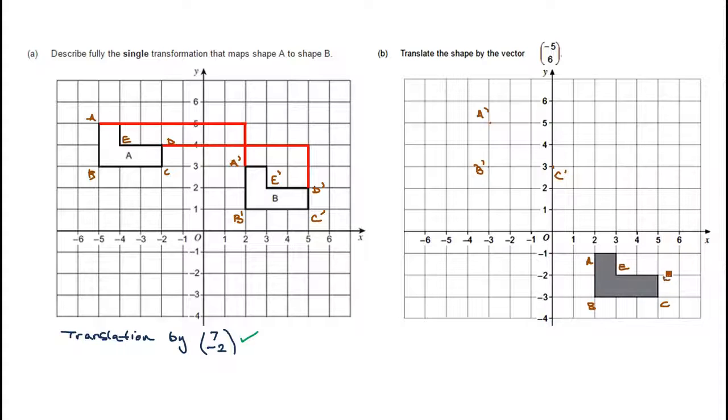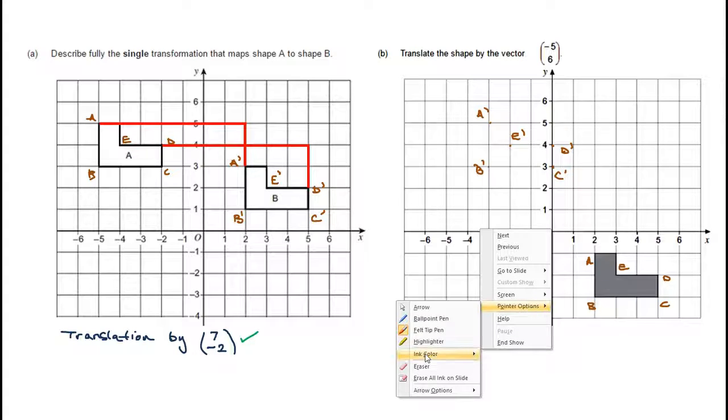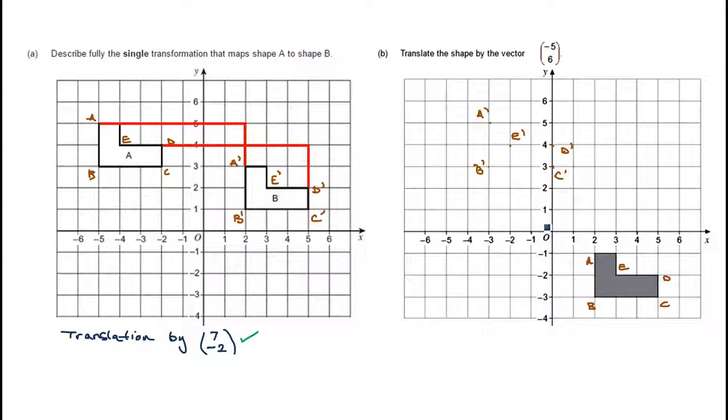D, we're going to go negative five, one, two, three, four, five, and six vertically, so that will take us to here, D prime. And E, three, four, five, and six takes us to E. So now we can join these together, and we've completed the question.